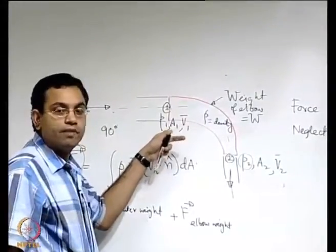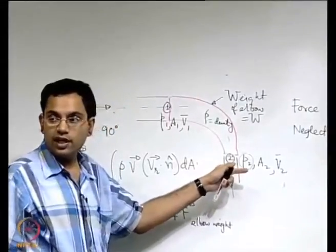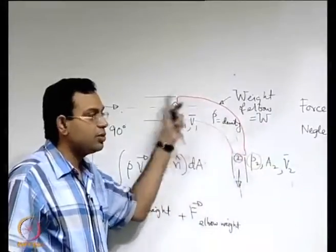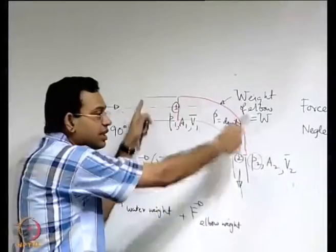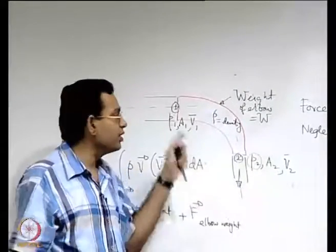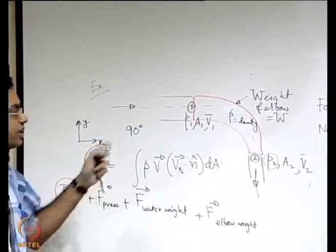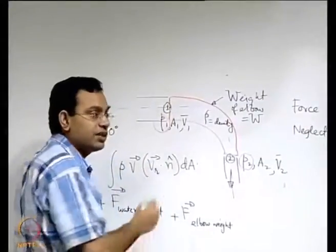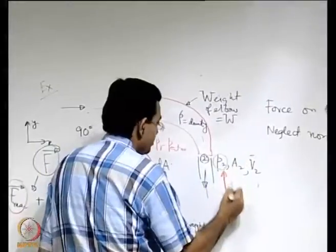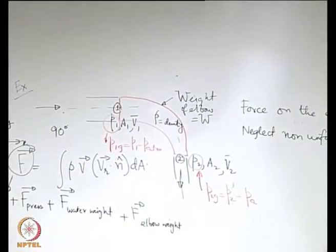For the force due to pressure: a crucial subtlety — one must use gauge pressure, not absolute pressure. Atmospheric pressure acts from all sides and its net integral over a closed contour is zero. So P1_gauge (= P1 − P_atmosphere) times A1 gives the net force at section 1, and similarly P2_gauge times A2 at section 2. This is a common source of student errors.